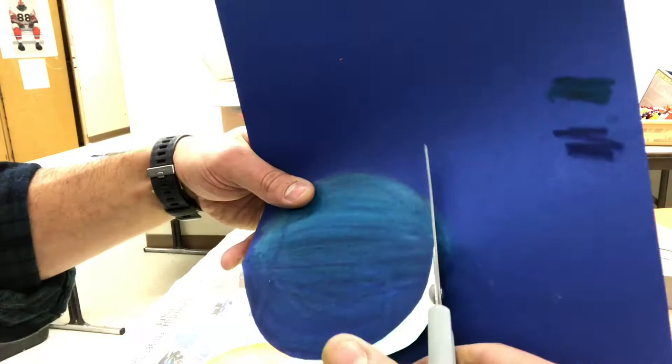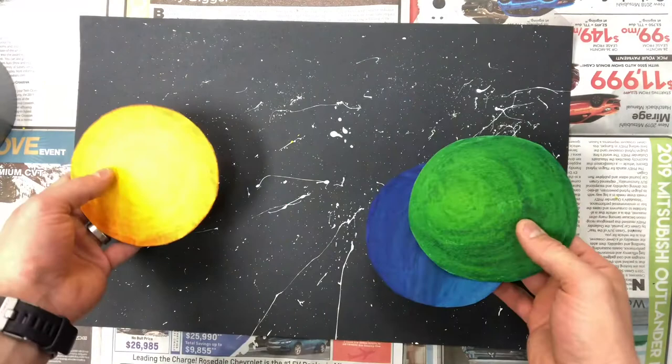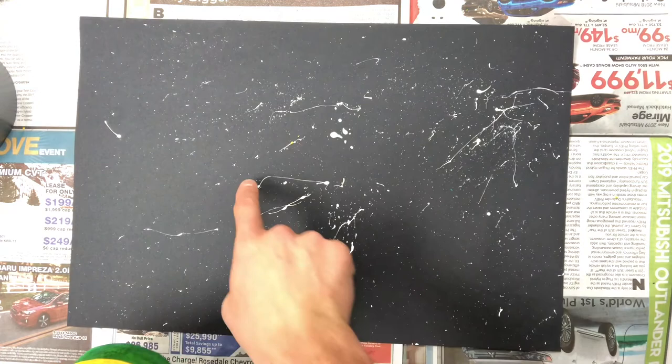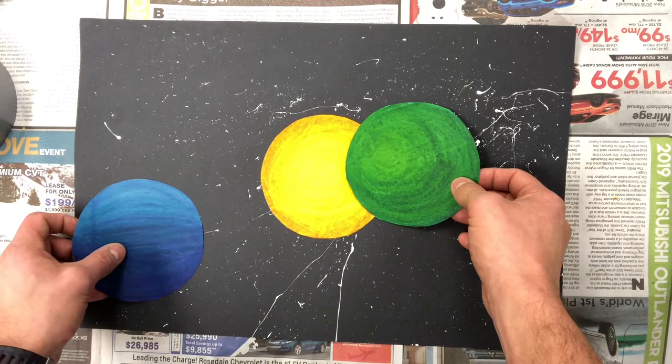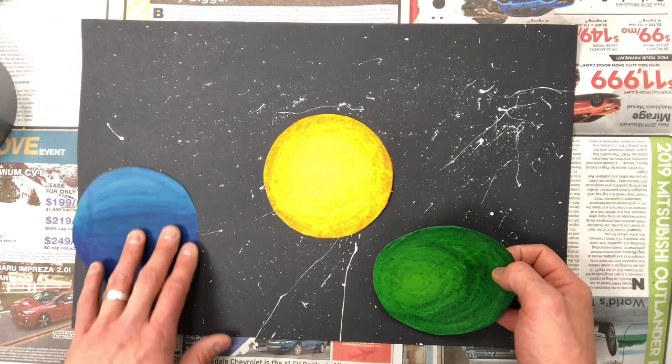Before you start gluing down your planets and your shapes, I want you to think about composition. First, if there's any imperfections on your splatter painting, you might consider hiding those with your different shapes. Also, I want you to show depth by overlapping one or several of your planets in front or behind each other. Also, leave a margin. Don't put a planet right next to the edge of your paper. Also, think about light source.